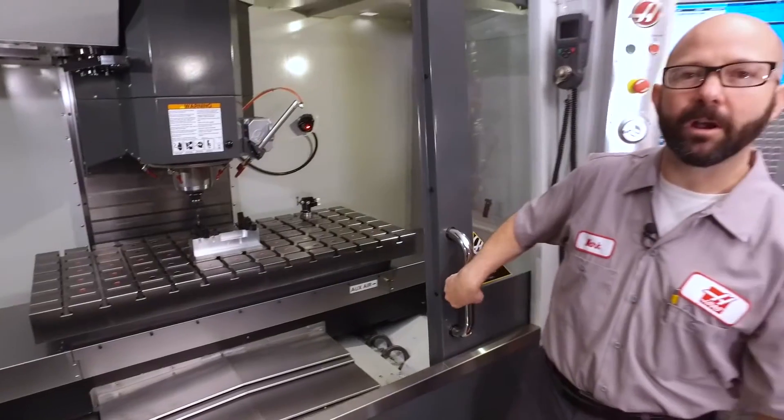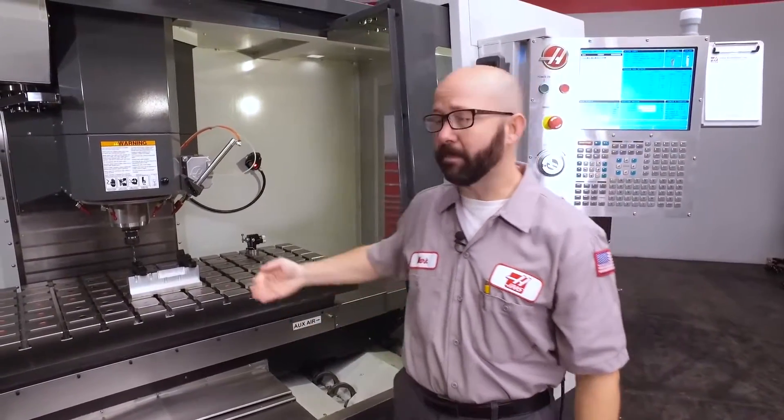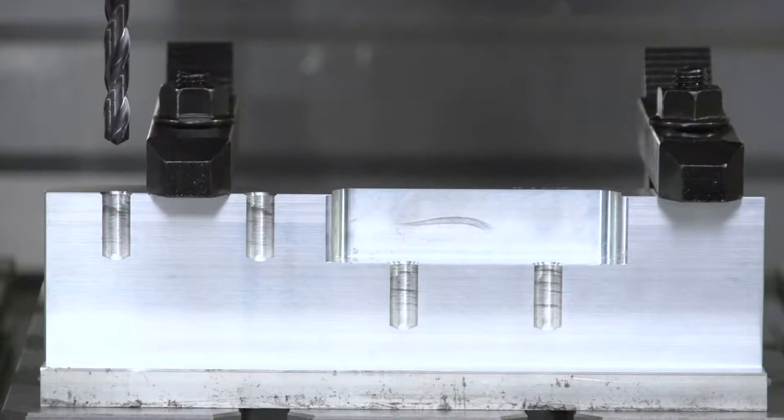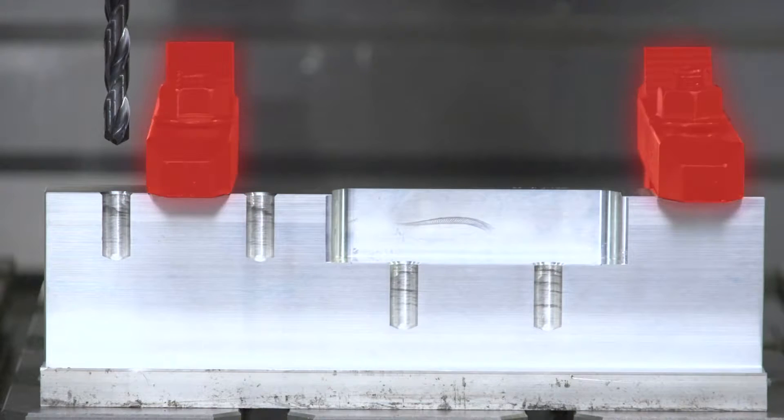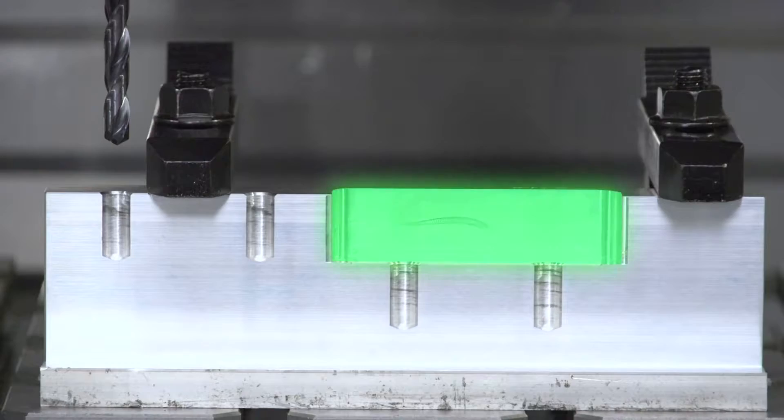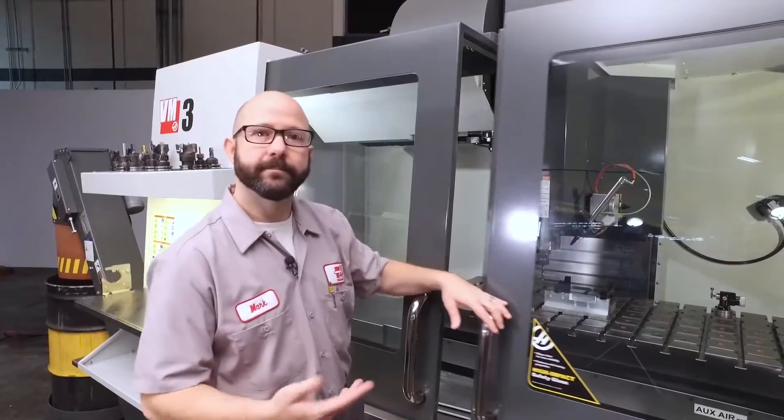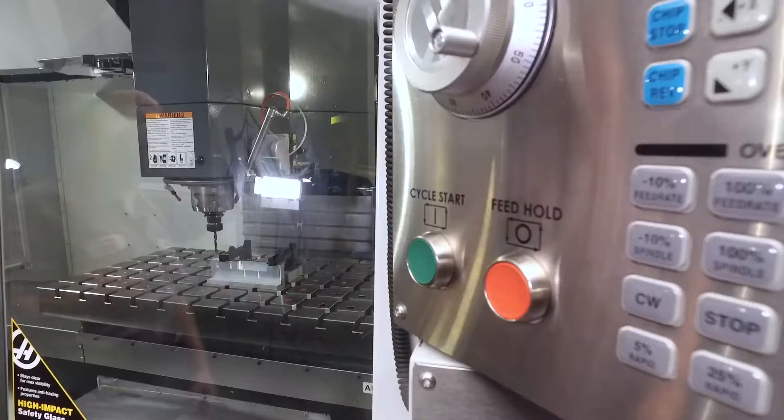Now I have this sample part clamped to the table. We've milled it in half, a cross section view, so we can see our four holes, our two clamps, and our one inch deep pocket. And we should be all set. It's about time to hit cycle start.